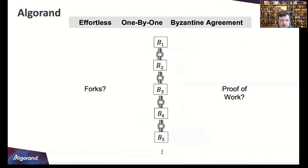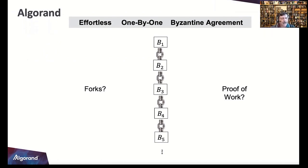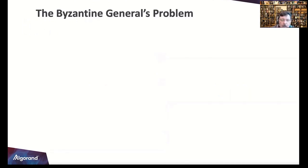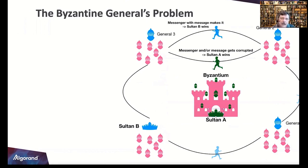Some of you may have heard of forks or proof of work with other blockchains like Bitcoin — it takes over ten minutes to burn a block, and competing machinery is trying to compute equations. It's not green at all, and transactions can get orphaned on a fork and go to another. There are a lot of problems especially when thinking about point-of-sale scalability. With Algorand, we don't use proof of work or forks.